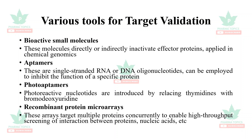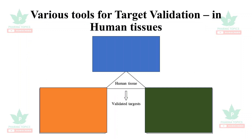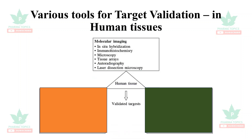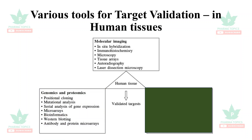The various tools for target validation in human tissues include molecular imaging such as in-situ hybridization, immunohistochemistry, microscopy, tissue arrays, autoradiography, and laser dissection microscopy.